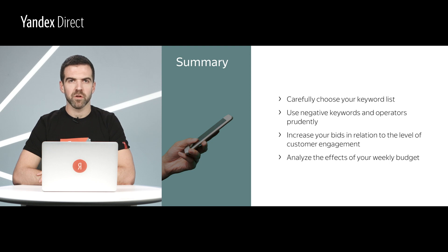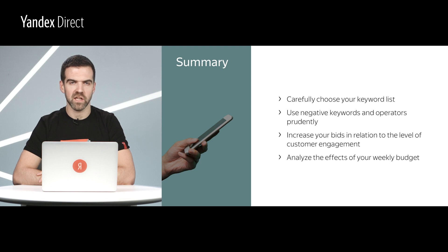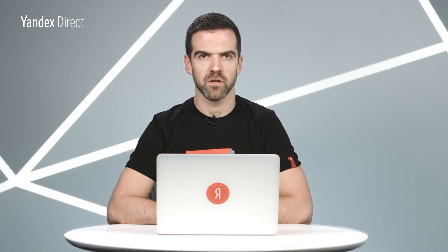Let's sum up what we've learned about setting up campaigns for ad networks: carefully choose your keyword list, use negative keywords and operators prudently, increase your bids in relation to the level of customer engagement, and analyze the effects of your weekly budget. All of the steps listed here will help you create a new campaign or optimize an existing one, so that you can meet the goals you have set for your business.